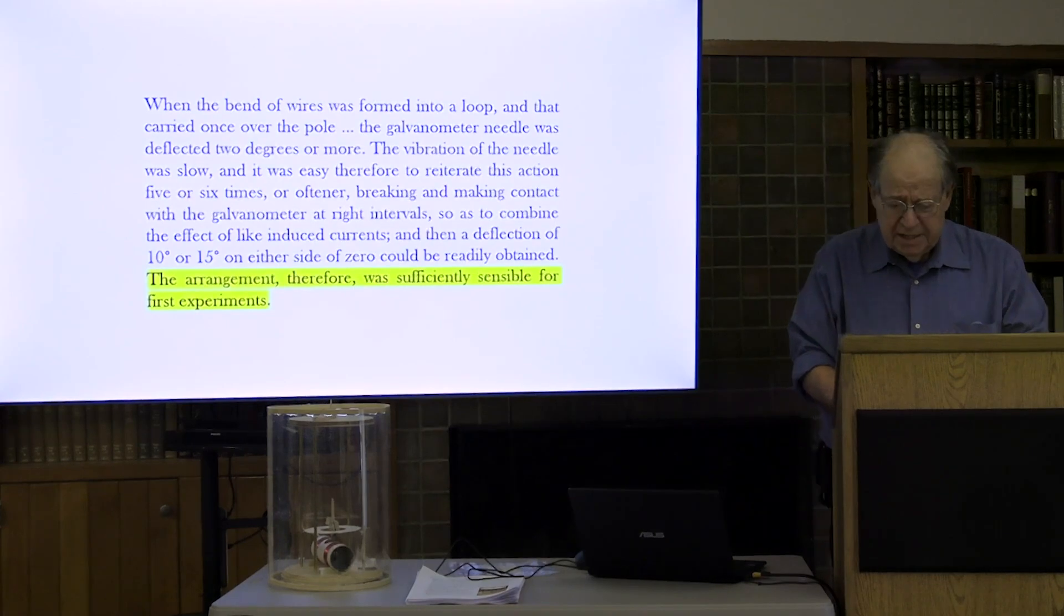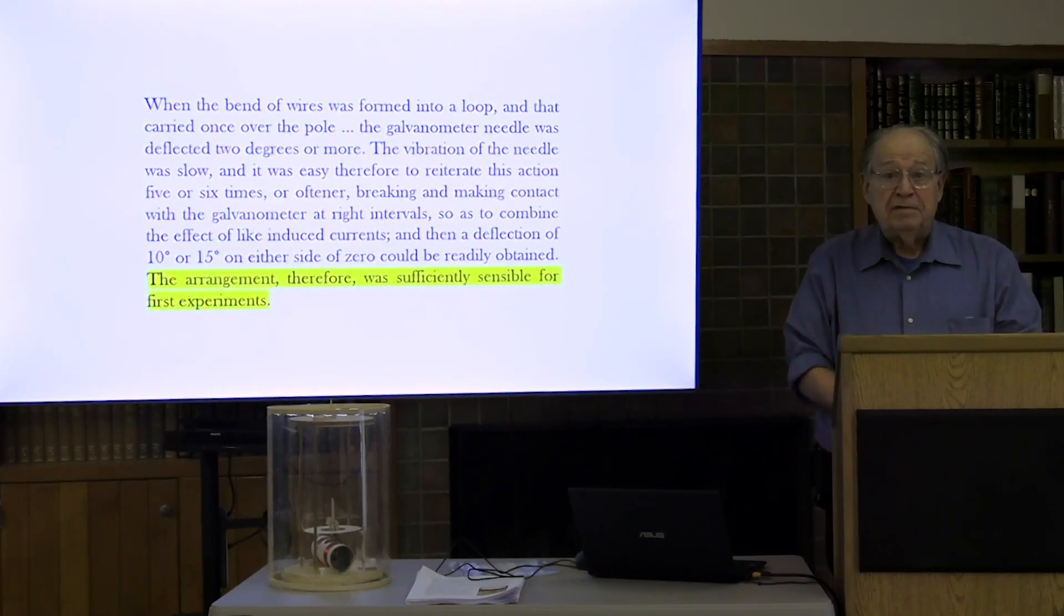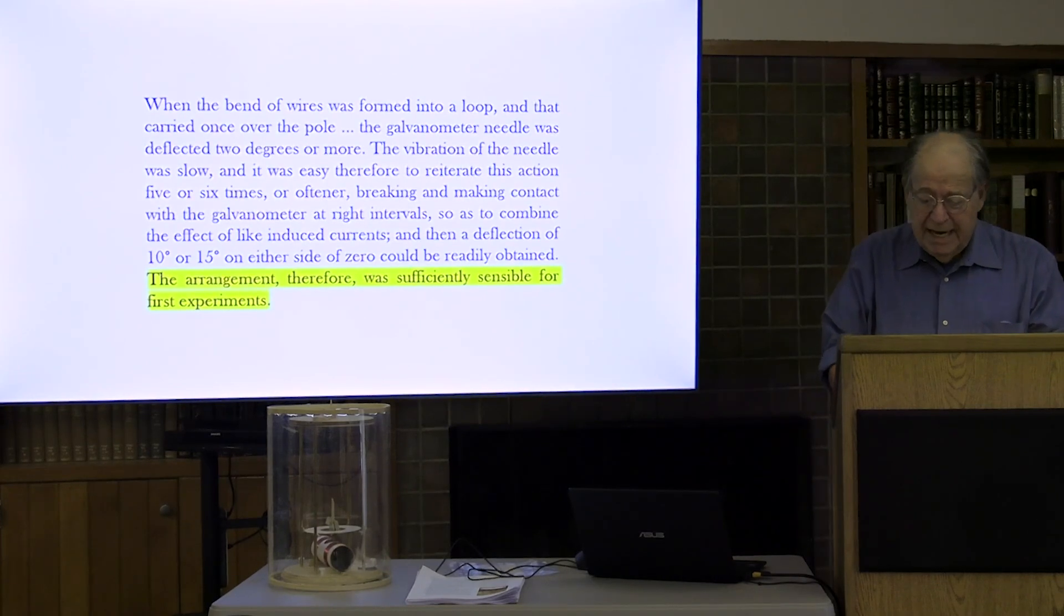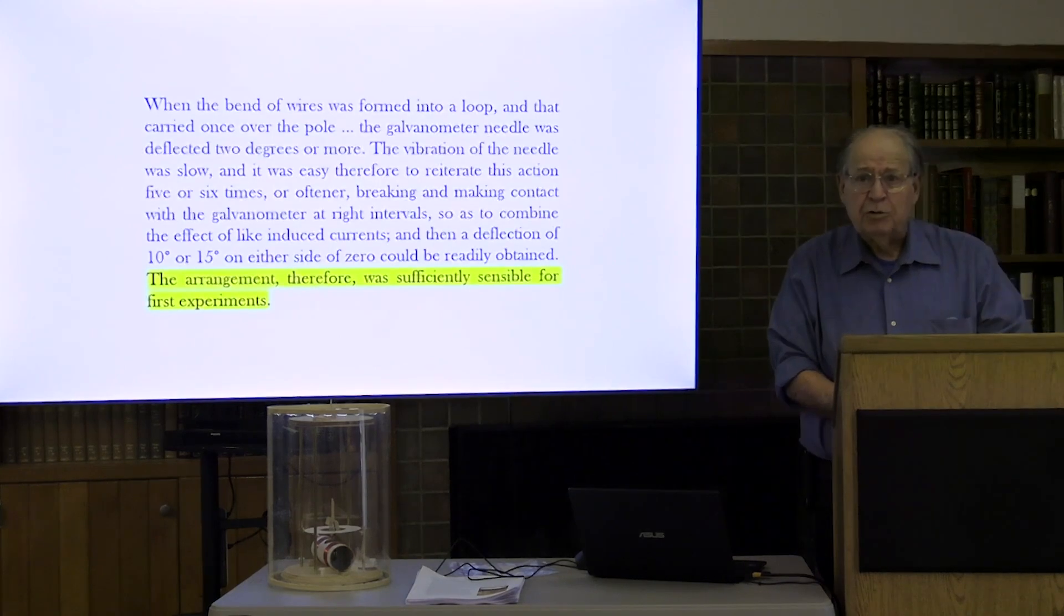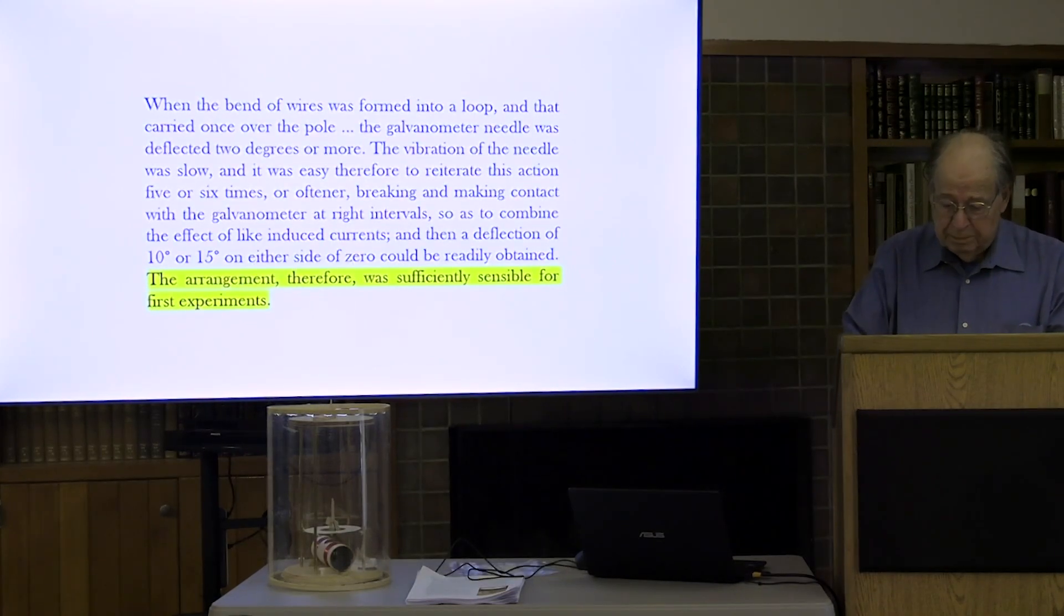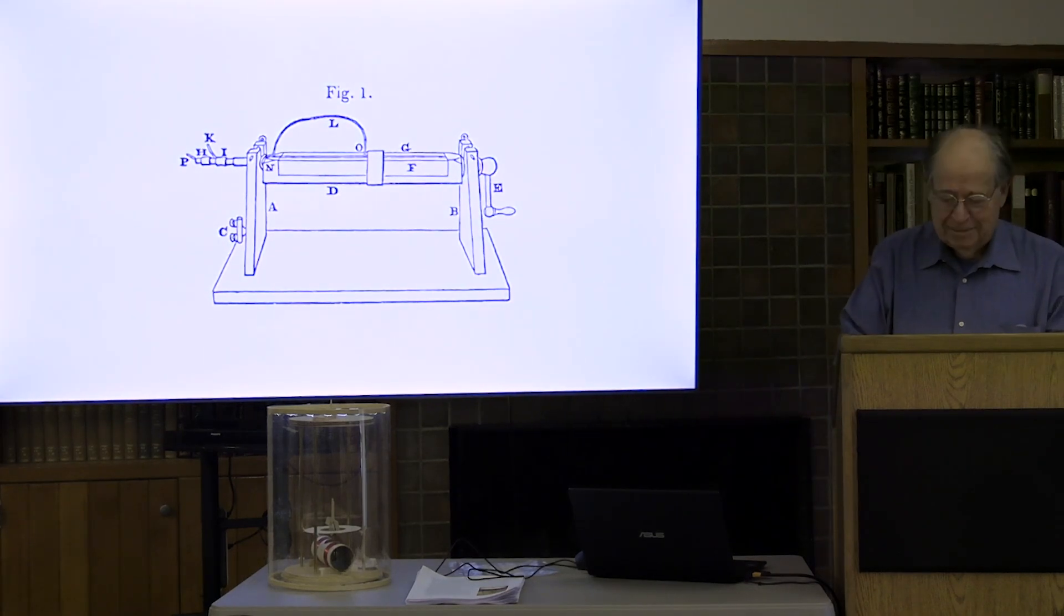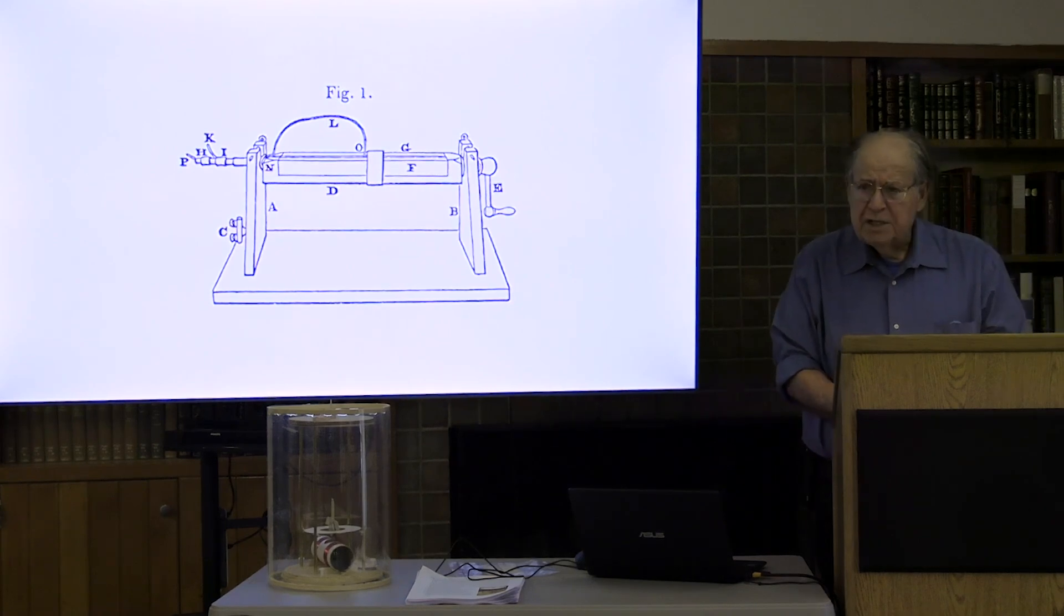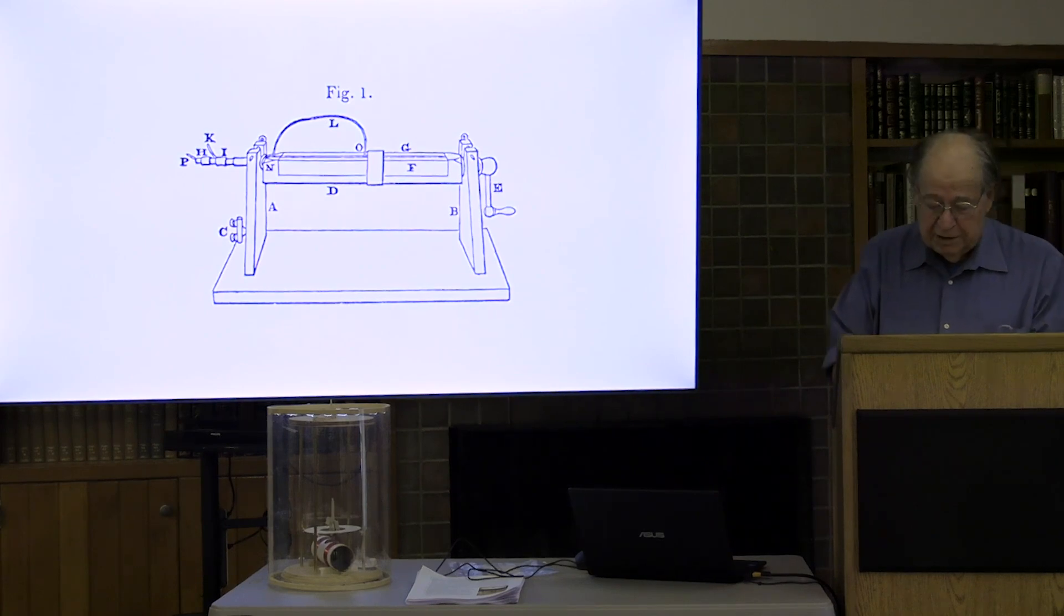When Faraday does finally link the galvanometer's deflection to the number of lines of force cut, he does so only after an extensive succession of trials, not with the simple wire loop, but with the ingenious rotary apparatus pictured here. What was this device able to establish that the simple wire loop could not?